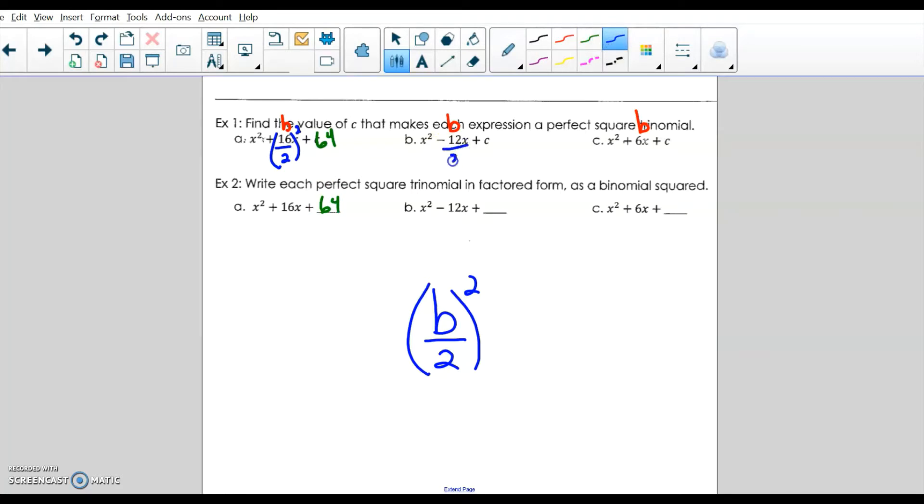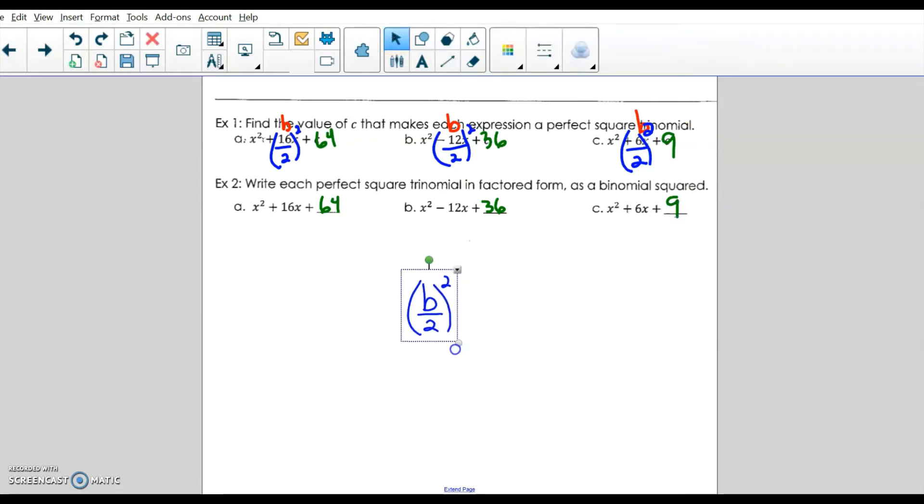So negative 12 divided by 2 is negative 6. Negative 6 squared is 36. So C will be 36. And on this last one, 6 divided by 2 is 3. 3 squared is 9. So 9 becomes the C value. So that technique, this B divided by 2 squared, that is the completion of square technique. So that becomes very important to solving by CTS.